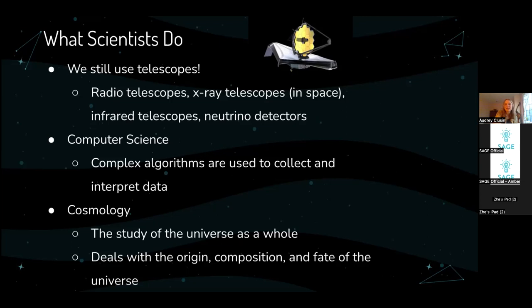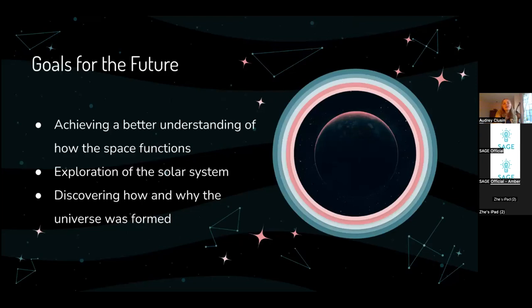Goals for the future: overall, scientists want to achieve a better understanding of how space functions. There are really complex questions we haven't even begun to answer. We want to explore the solar system more — send people to Mars, possibly think about living there, see if life can survive there, and find other places we can go to explore. We also want to discover how, why, and of what the universe was formed, which is a really important topic that people are trying to answer.